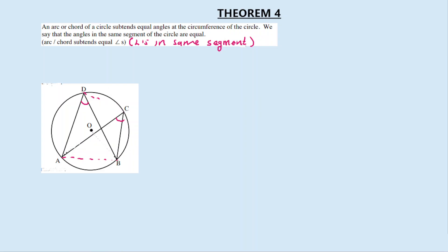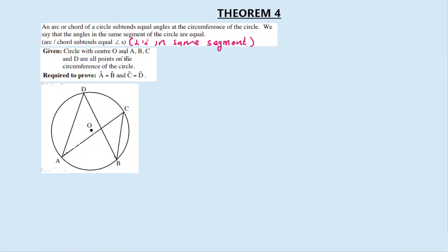For theorem number 4, we are given the following: a circle with center O, and points A, B, C, D, and R are all points on the circumference of the circle. Theorem number 4 is sometimes referred to as the bowtie theorem.